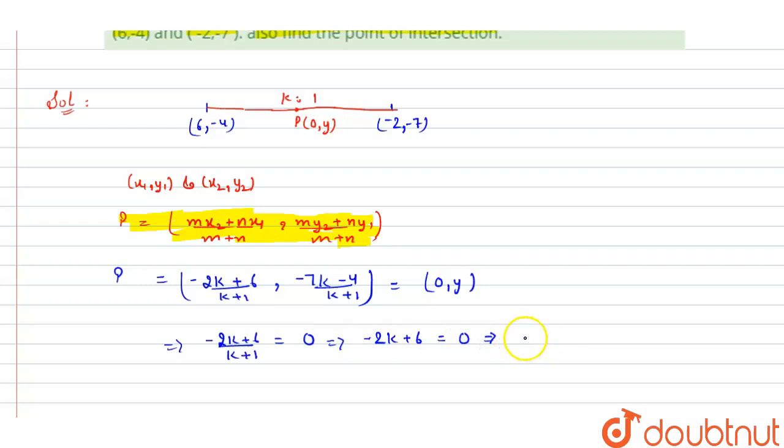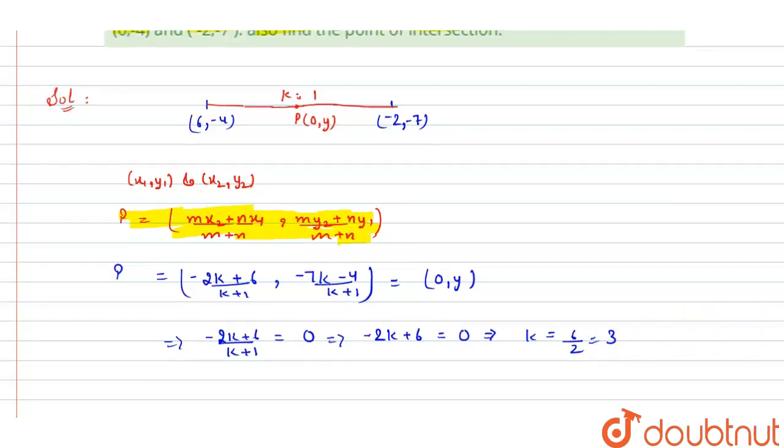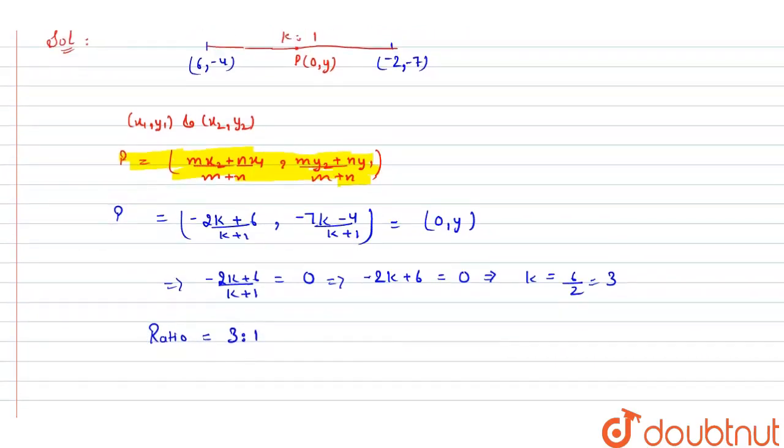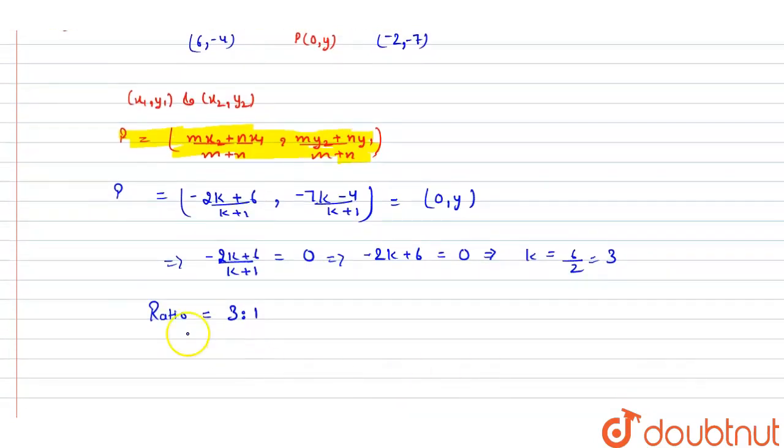This implies k equals 6 by 2, that is 3. So the value of k we are getting here is 3. Now the ratio is 3 is to 1, and the point of intersection, that is the value of y, we can also find by comparing the second coordinate.